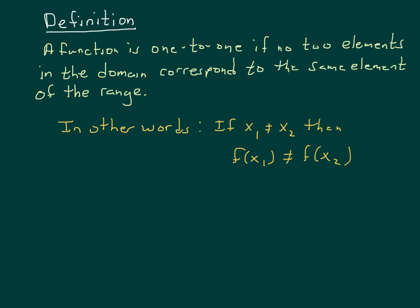Let's start out with a definition of what it means to be one-to-one. A function is said to be one-to-one if no two elements in the domain correspond to the same element of the range. In other words, if I have two x values, call them x₁ and x₂, and I know they're not equal, then f(x₁) cannot be equal to f(x₂).